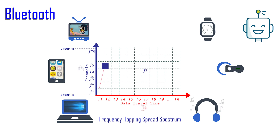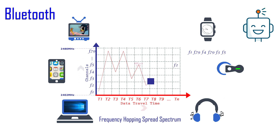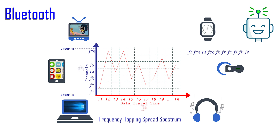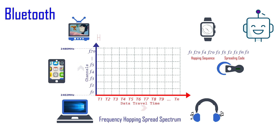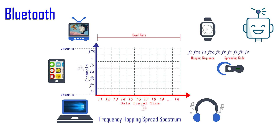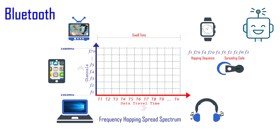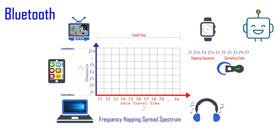This means the sender sends data using frequency F1 for 625 microseconds and then changes frequency. Two different senders use different frequency patterns. This sequence is known as the hopping sequence or spreading code. The amount of time spent on each frequency or hop is known as dwell time. This is how a single Bluetooth headset can connect to multiple devices at the same time, enabling you to talk on the phone or listen to music without the bother of wires or cords.